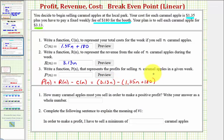We do need the parentheses here to make sure we subtract the entire cost function. So now we would combine like terms, we would distribute a negative one here to clear the parentheses. So we'd have 3.13n minus 1.35n minus 180.